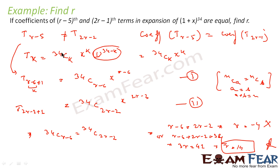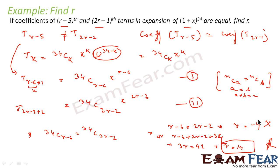To summarize: we were told the coefficients of the T(r-5) and T(2r-1) terms are equal. We found both terms, equated their coefficients, and applied the rule that if nCa = nCb then a = b or a + b = n. One value of r was negative so we discarded it, giving r = 14.